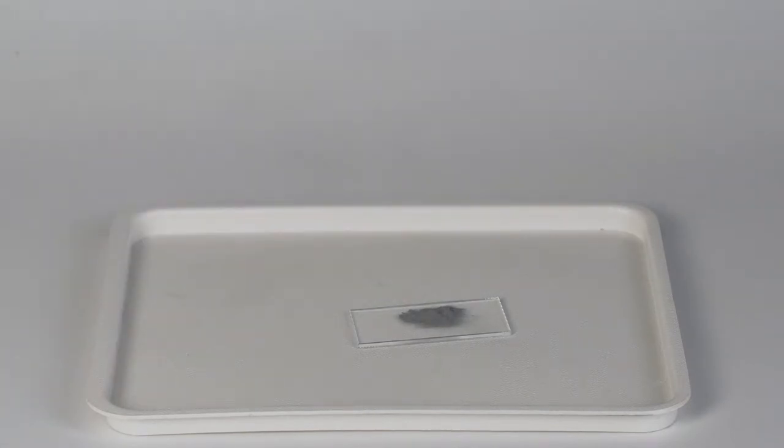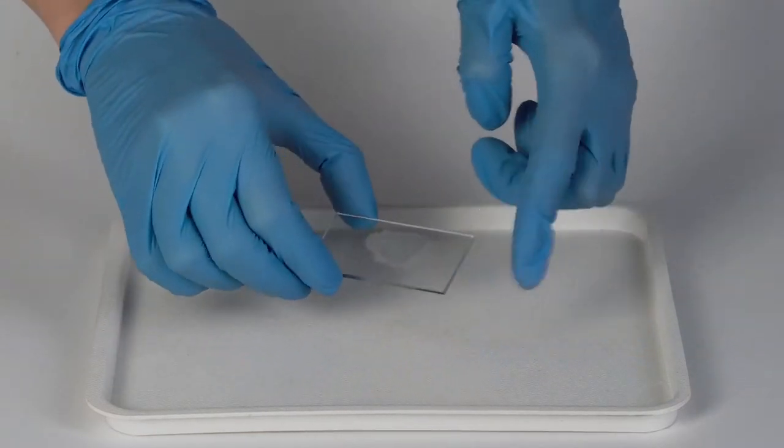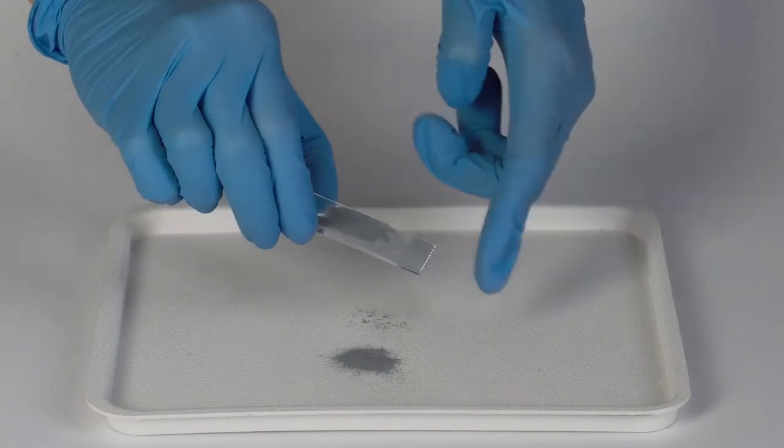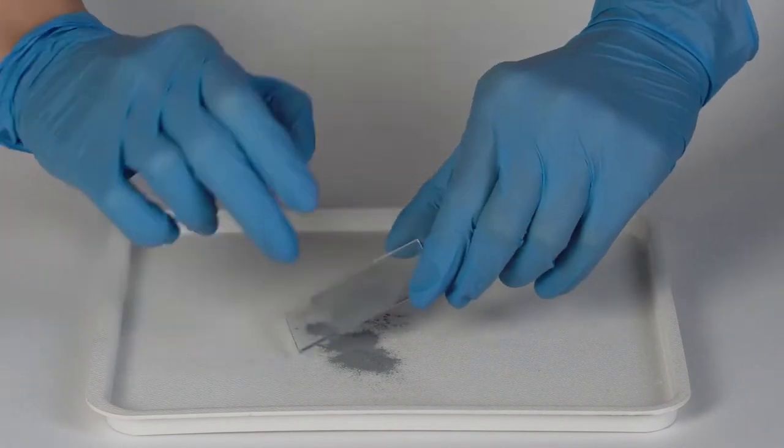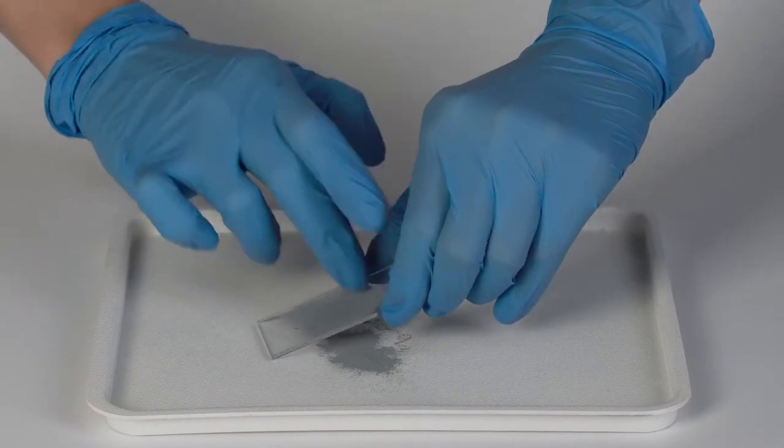Carefully shake the glass slide to distribute the zinc on its surface. Hold the glass slide over the plastic tray and turn it over. Gently tap on the back of the slide to remove any remaining zinc powder.